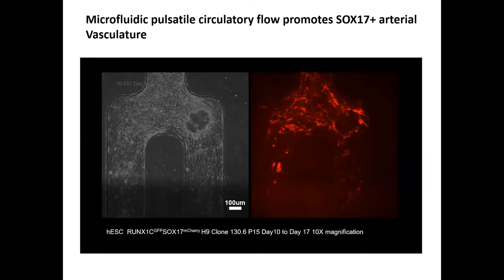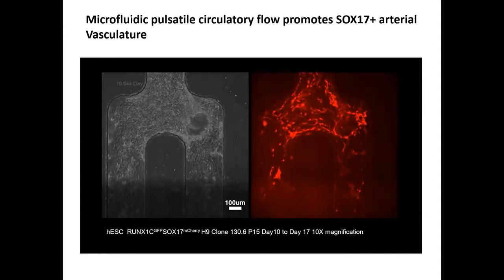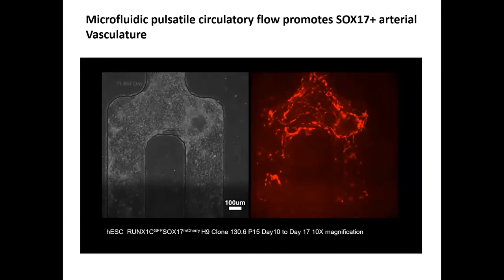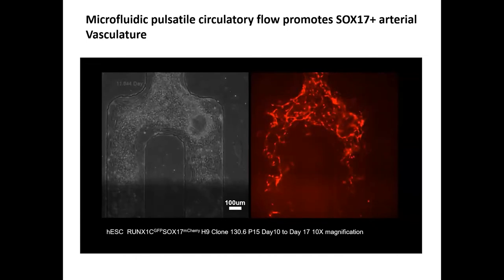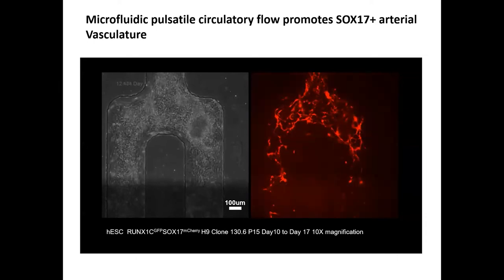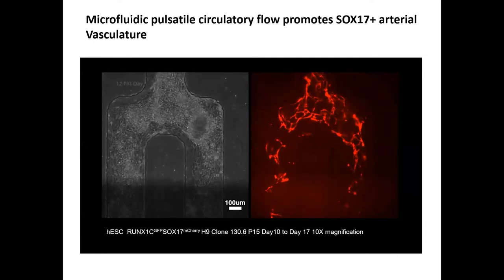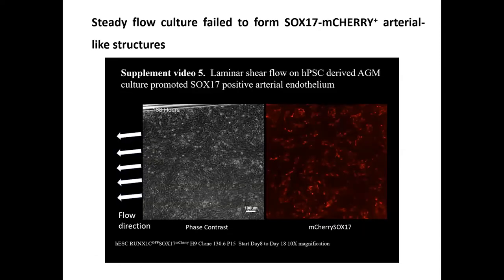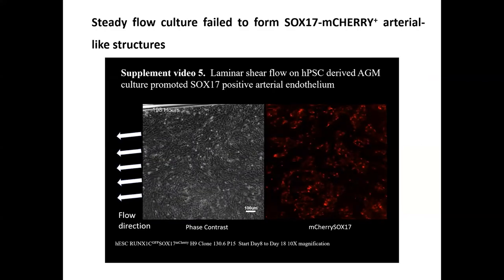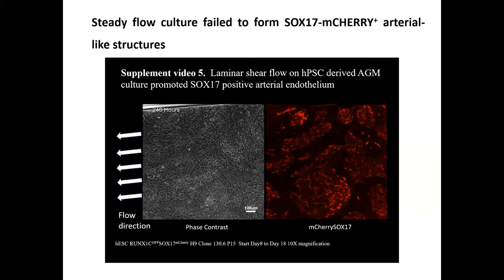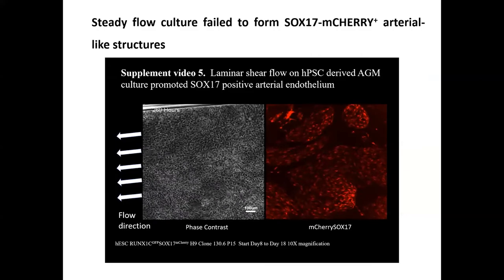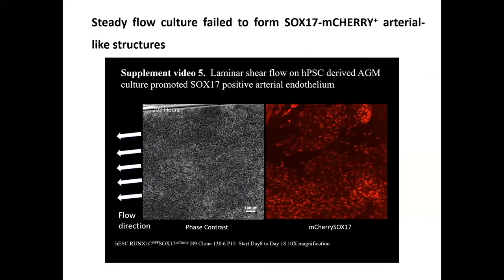Here is a time-lapse phase and fluorescent microscopic video recorded during hematopoietic differentiation on chip from day 10 to day 17. SOX17-mCherry-positive arterial-like structures formed along the microfluidic channels, aligning with the direction of flow. We observed lightly tethered cells entering the circulation from the adherent layers, some of which were migratory SOX17-mCherry-positive. In comparison, differentiation in steady flow culture in a parallel plate flow cell at 5 dyne per square centimeter generated a migratory sheet of SOX17-mCherry-positive cells moving towards the flow inlet, but failed to form SOX17-mCherry-positive arterial-like structures.